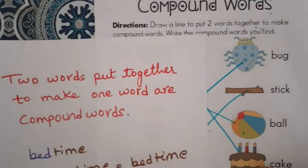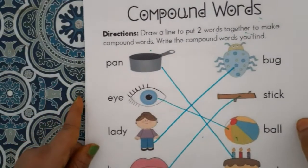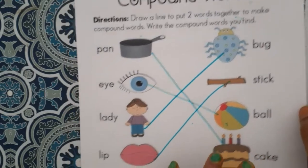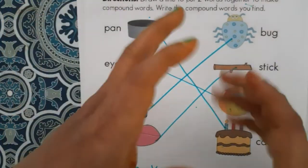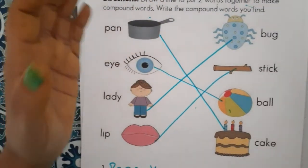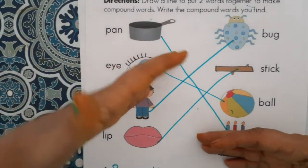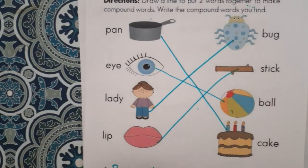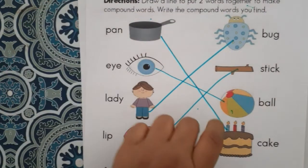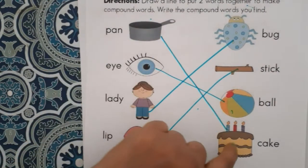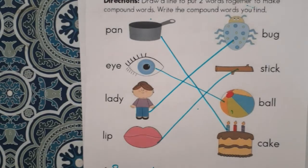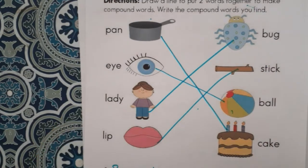Pancake — when you divide the word you get pan and cake separately, but when you combine them you get one word, pancake. Pan plus cake equals pancake. Same with cup plus cake equals cupcake, and foot plus ball equals football.